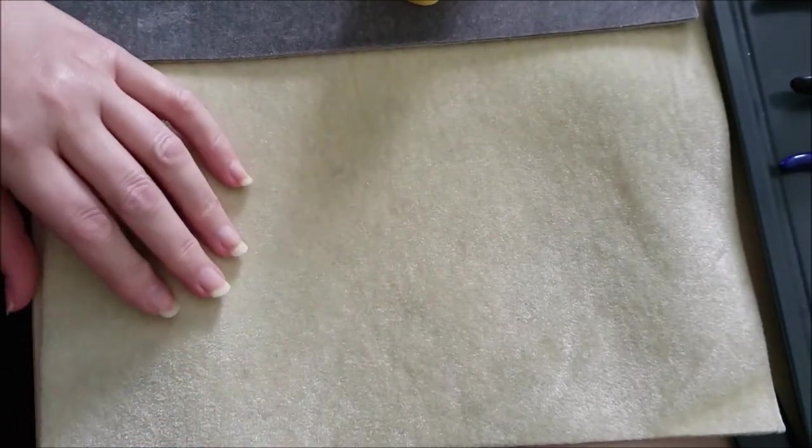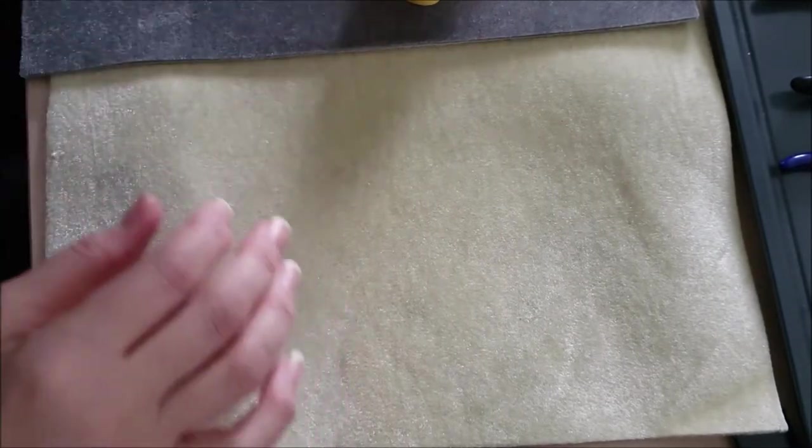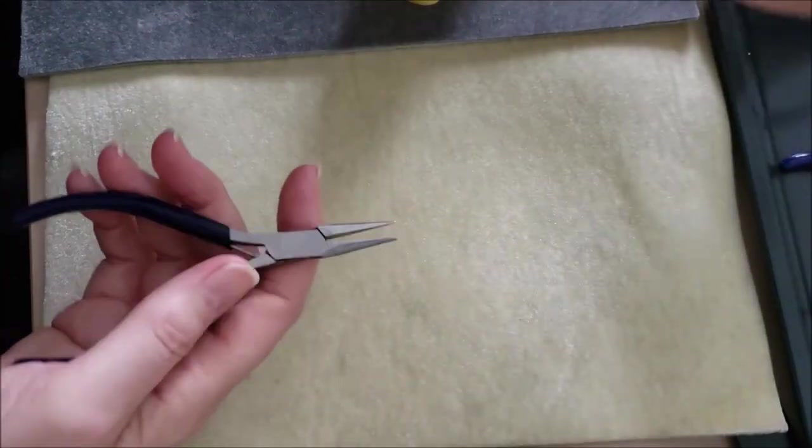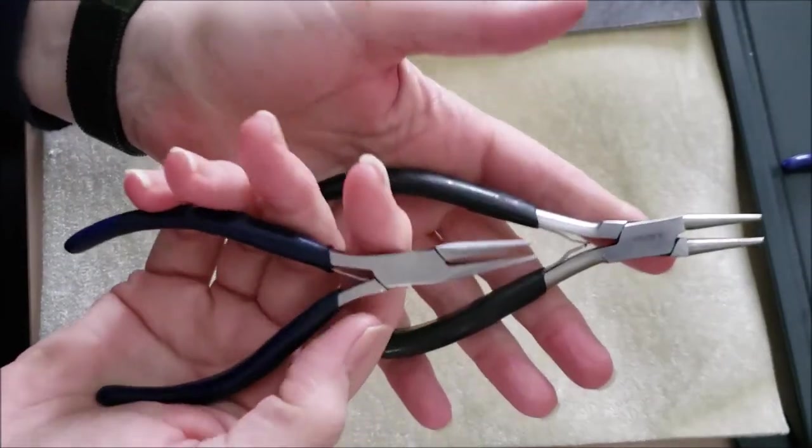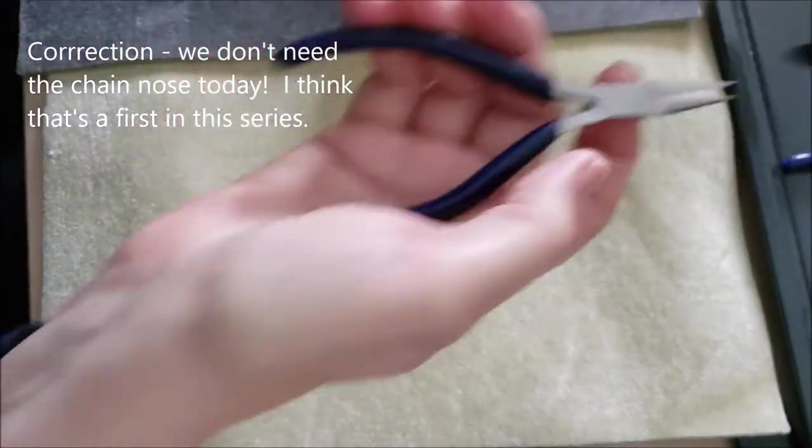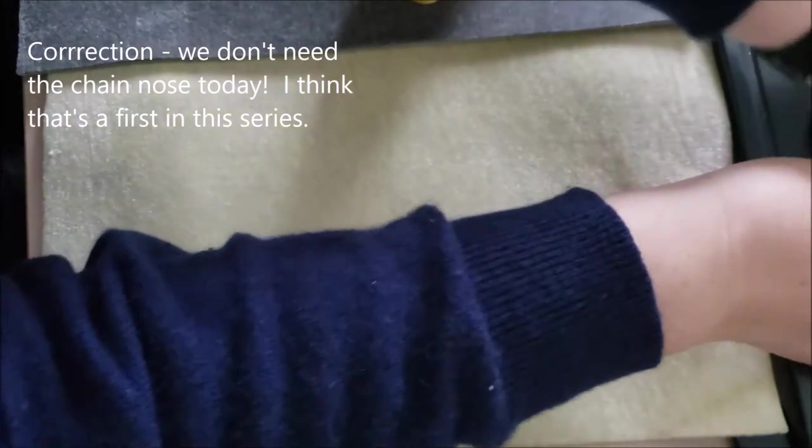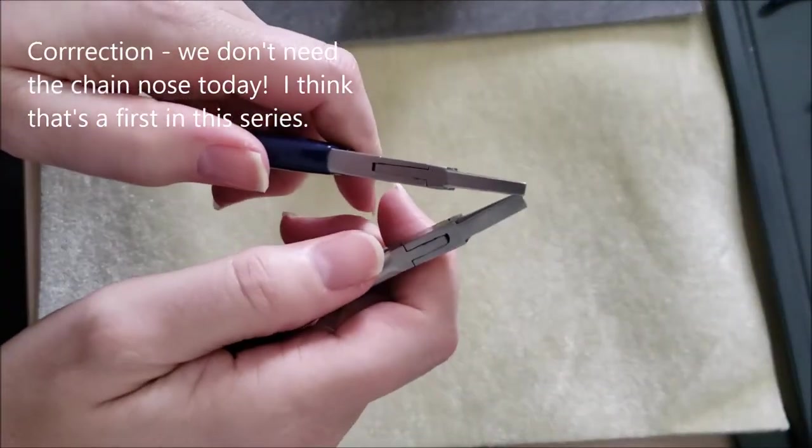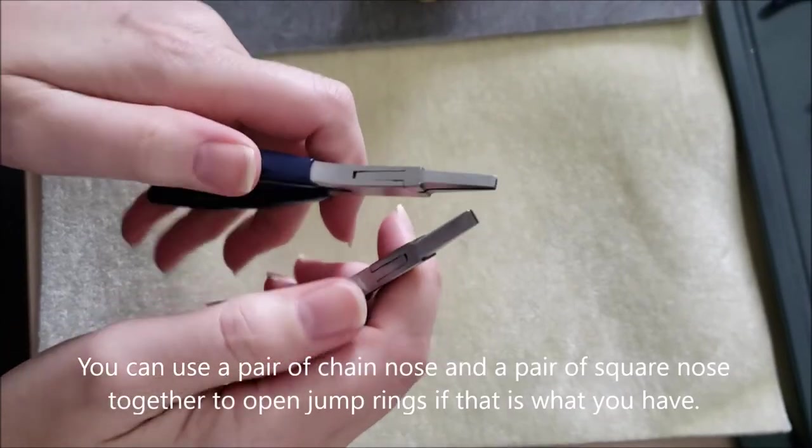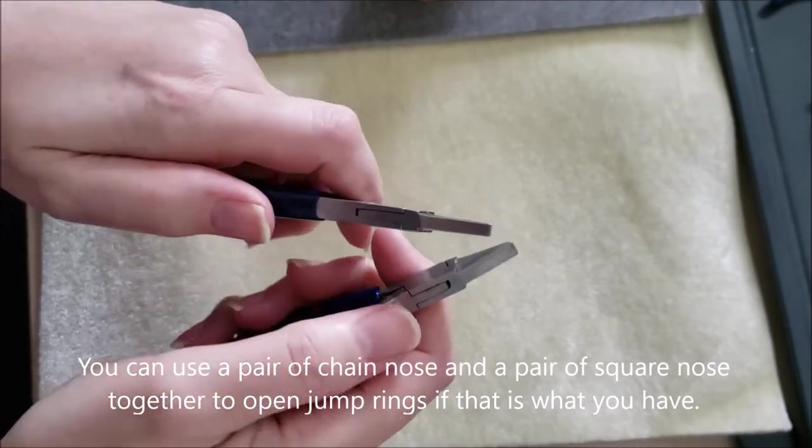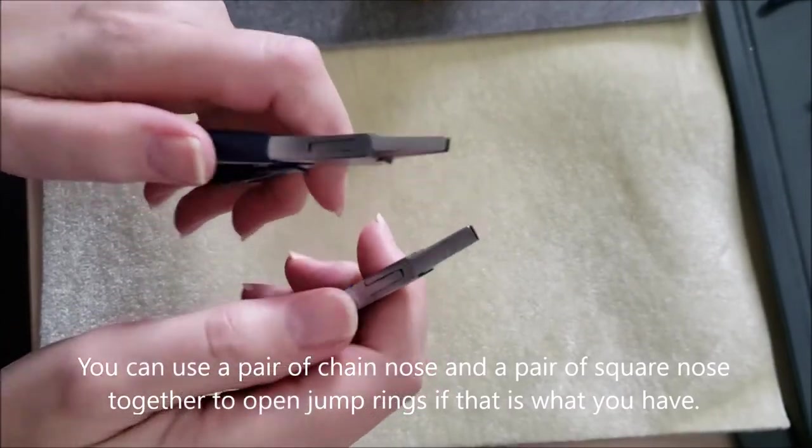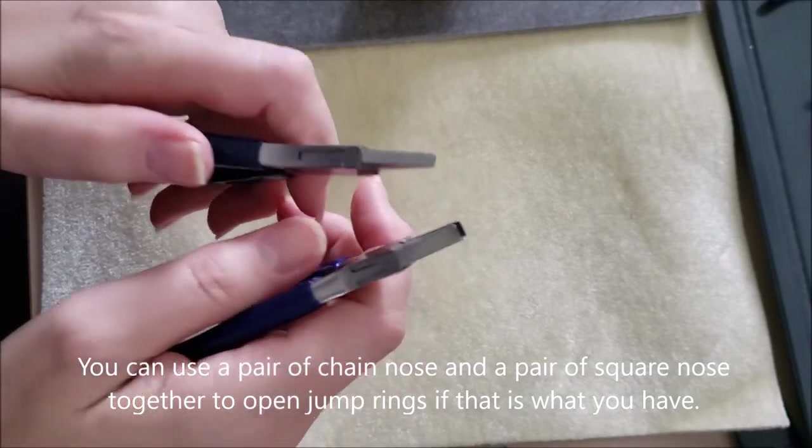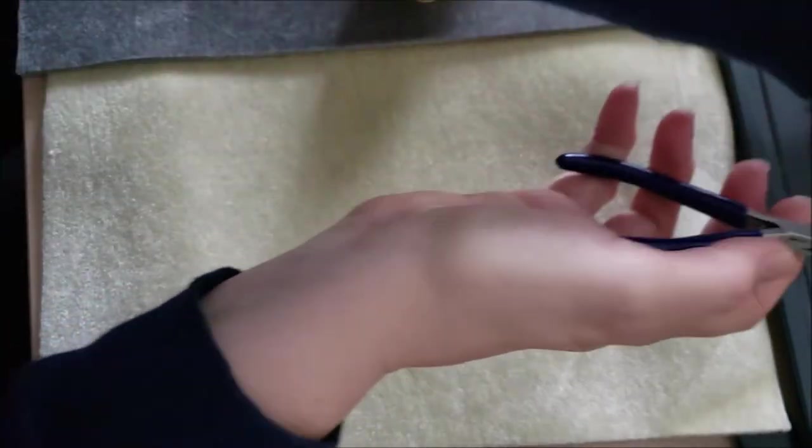Let's talk about the tools we're going to need today. You're going to want your round nose pliers and your chain nose pliers. You're going to want square nose pliers. I like to have two. They make opening and closing jump rings really convenient and also for tweaking your clasp.